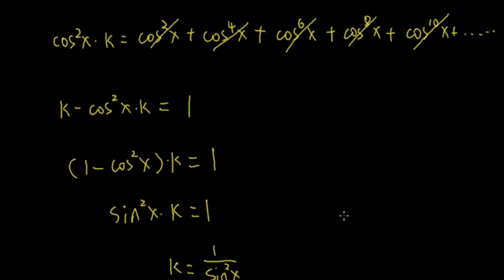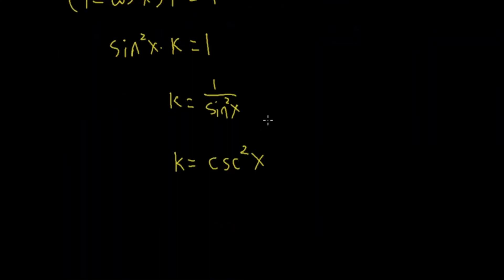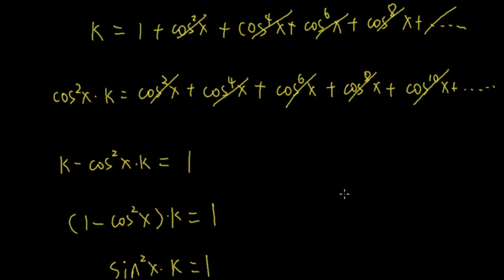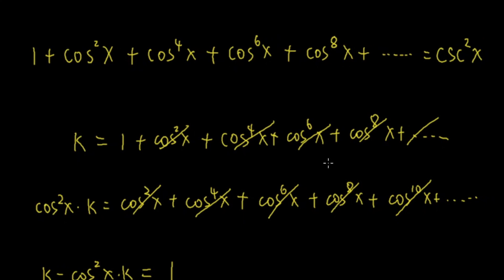Now we said k is equal to this infinite series, and k is equal to cosecant squared x — that means this infinite series is equal to cosecant squared x. Hope you enjoyed this video, don't forget to subscribe to my channel, thank you.